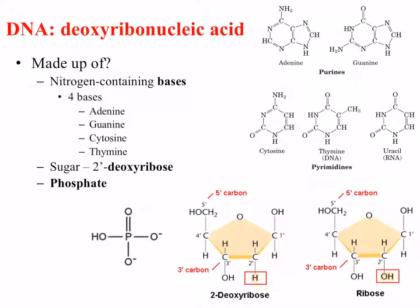In addition to the nitrogen-containing bases, DNA also contains a sugar. In the case of DNA, it's called 2-deoxyribose. In the diagram at the bottom right, you can see the structures of 2-deoxyribose and ribose annotated with 1', 2', 3', 4', and 5' — very important notation with consequences when we come to talk about replication and transcription. At position 2', you can see that it is attached to either an H or an OH, depending on whether it's deoxyribose or ribose.